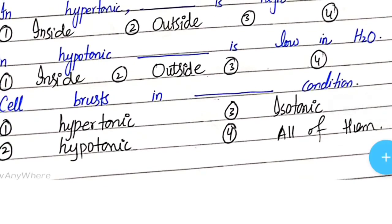In hypotonic solution, the cell bursts. It bursts when too much water enters — meaning solute inside is more and water outside is more, so water moves from outside to inside. Basically, the cell bursts in hypotonic condition, so option two is correct.